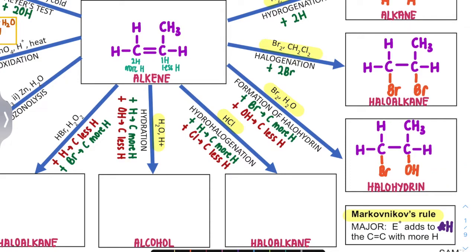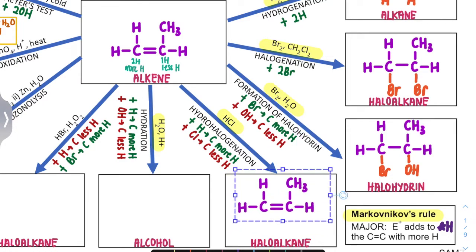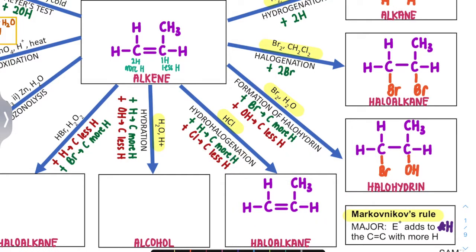Next is hydrohalogenation. Here we have HCl — hydrogen and a halogen. This is simpler: H adds to the carbon with more H. So the other one, Cl, will be added to the carbon with less H. The carbon with more H is on the left-hand side, so we add hydrogen there. The carbon next to it gets the chlorine.